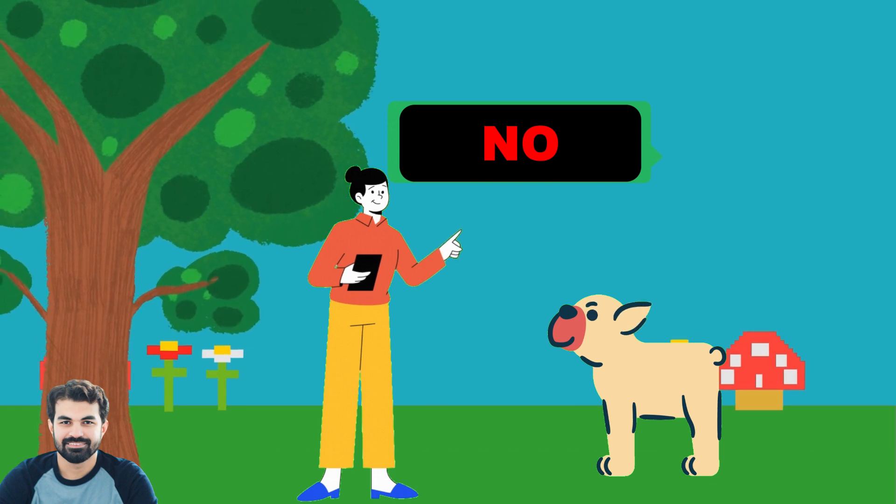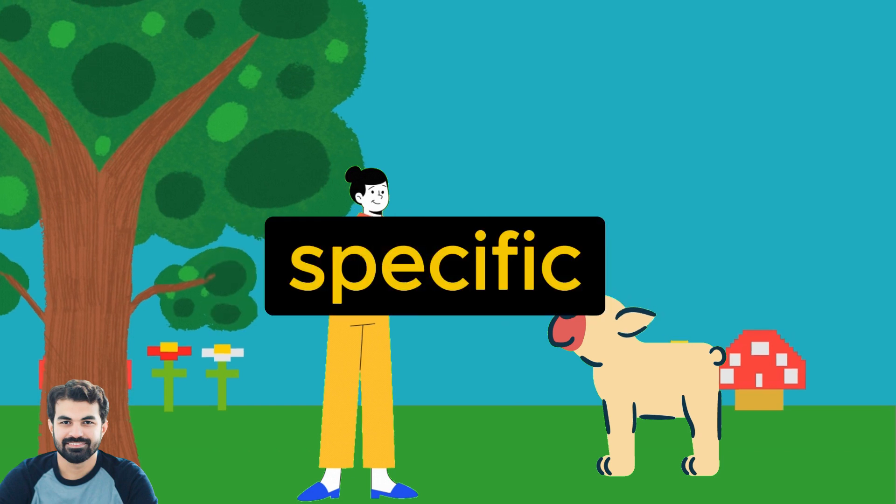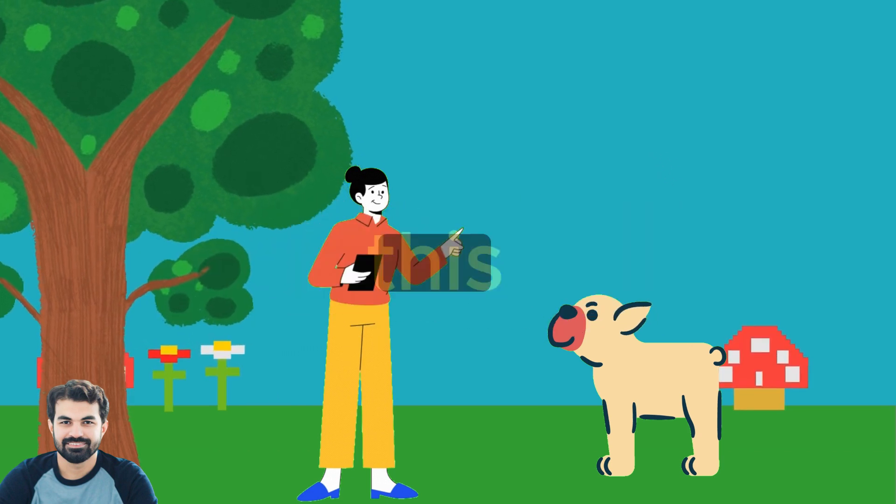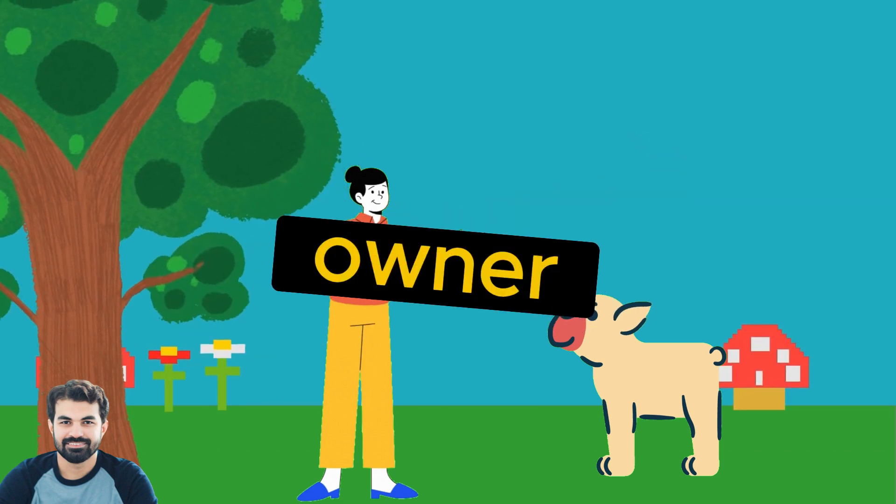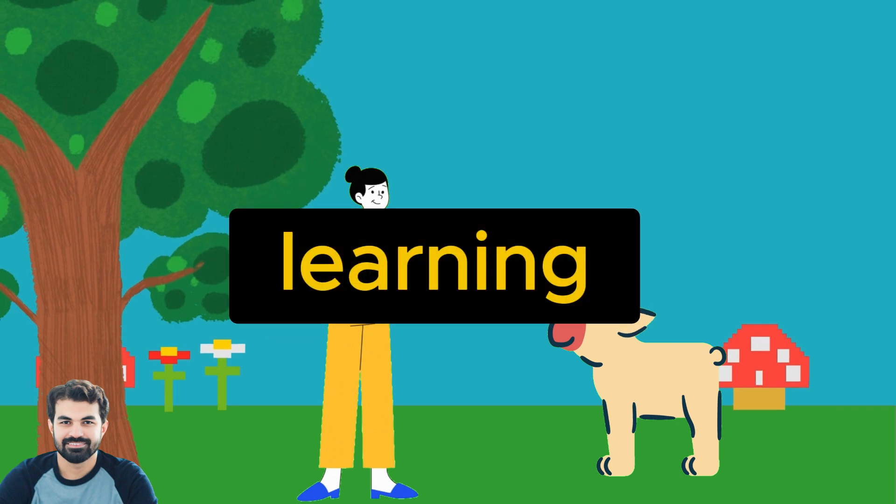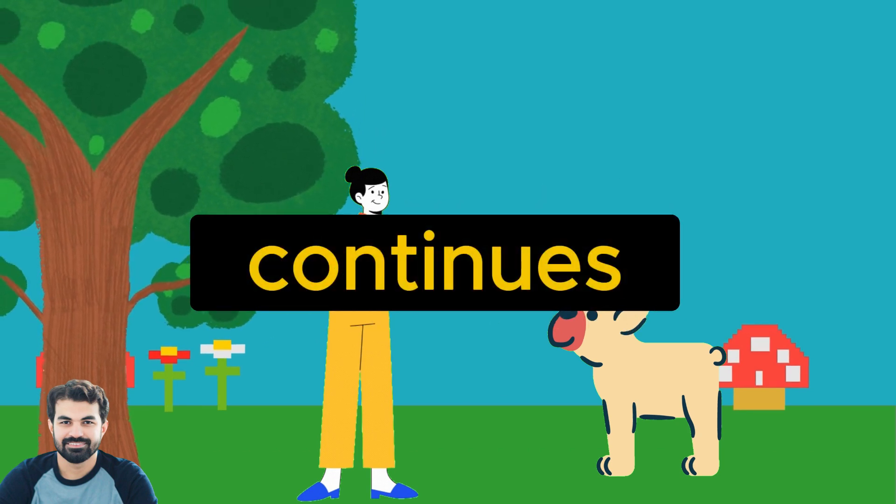Now the dog faces a dilemma: was running just a bad action overall, or was it only a poor choice in response to this specific command? He can only figure this out by interacting more with his owner, testing different actions and learning from the outcomes. And so the process continues.